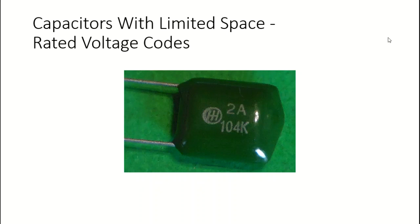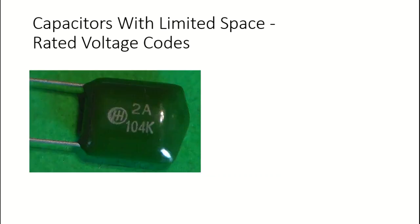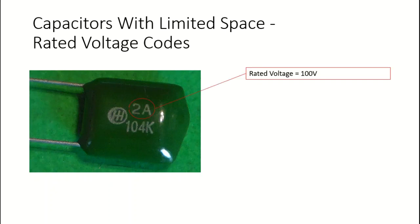Similar to the codes for capacitance values and tolerances, there is also a code established to express the rated voltage for a capacitor. Looking at this table, it gives you the codes and the voltages associated with those codes. For the previous capacitor, you'll remember the code had '2A', and the voltage related to that code is shown in the table. Going back to our capacitor, since '2A' is written there, the rated voltage is 100 volts.